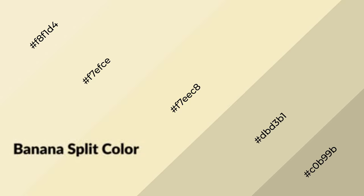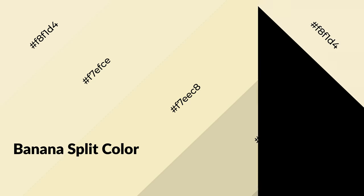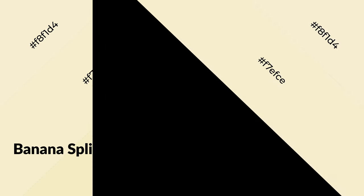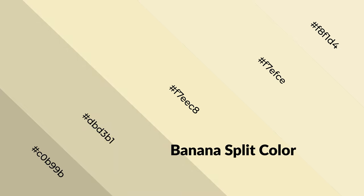Banana split is a warm color and it emits cozier and active emotions. Warm colors are symbols of warmth, fire, heat, and sunshine. It also evokes joy, passion, love, and even anger. You can see them used in restaurants and gyms.